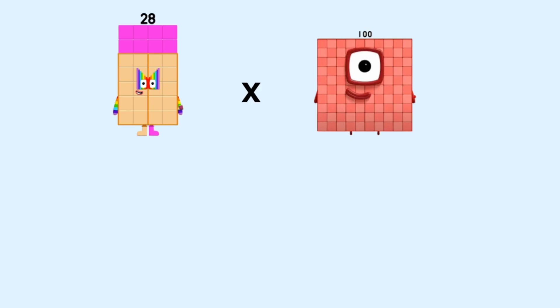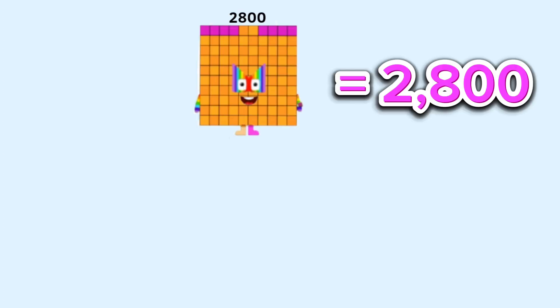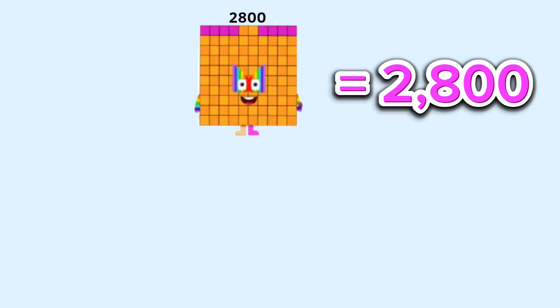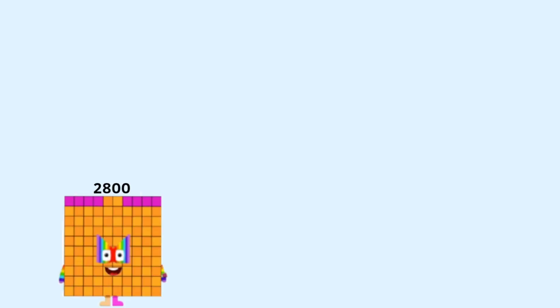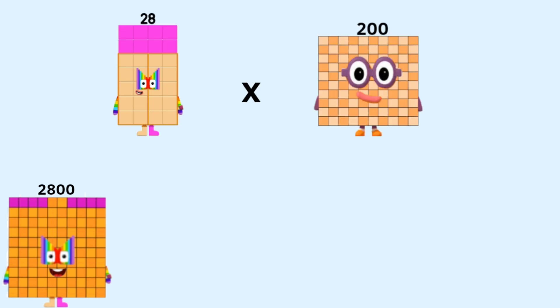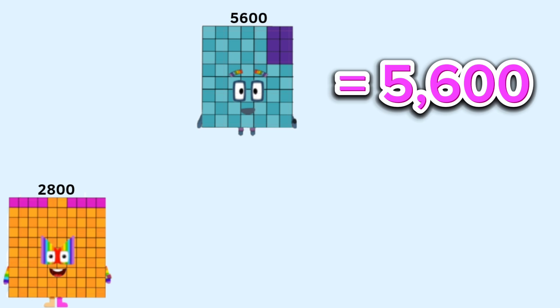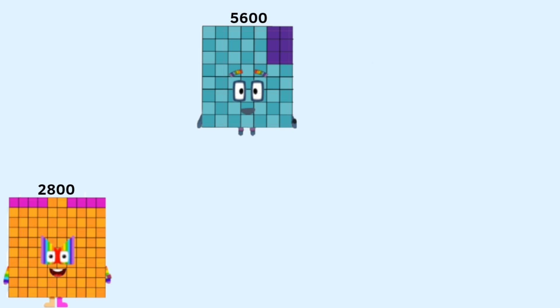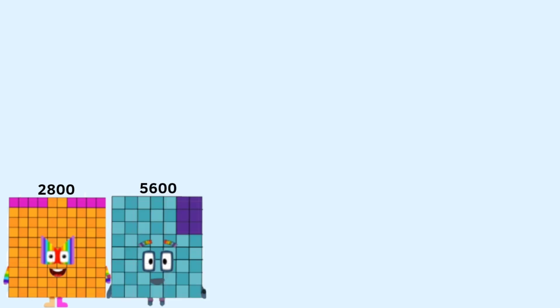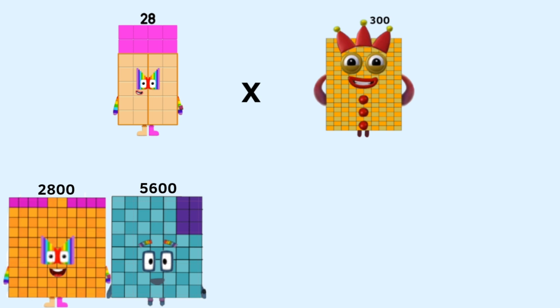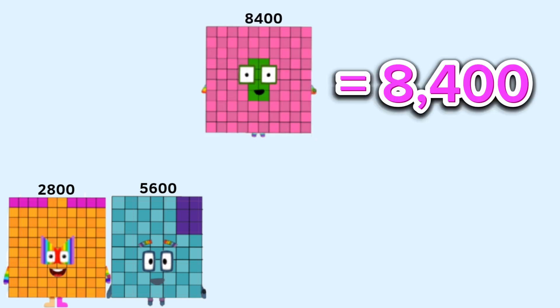Stage 3. 28 times 100 equals 2,800. 28 times 200 equals 5,600. 28 times 300 equals 8,400.